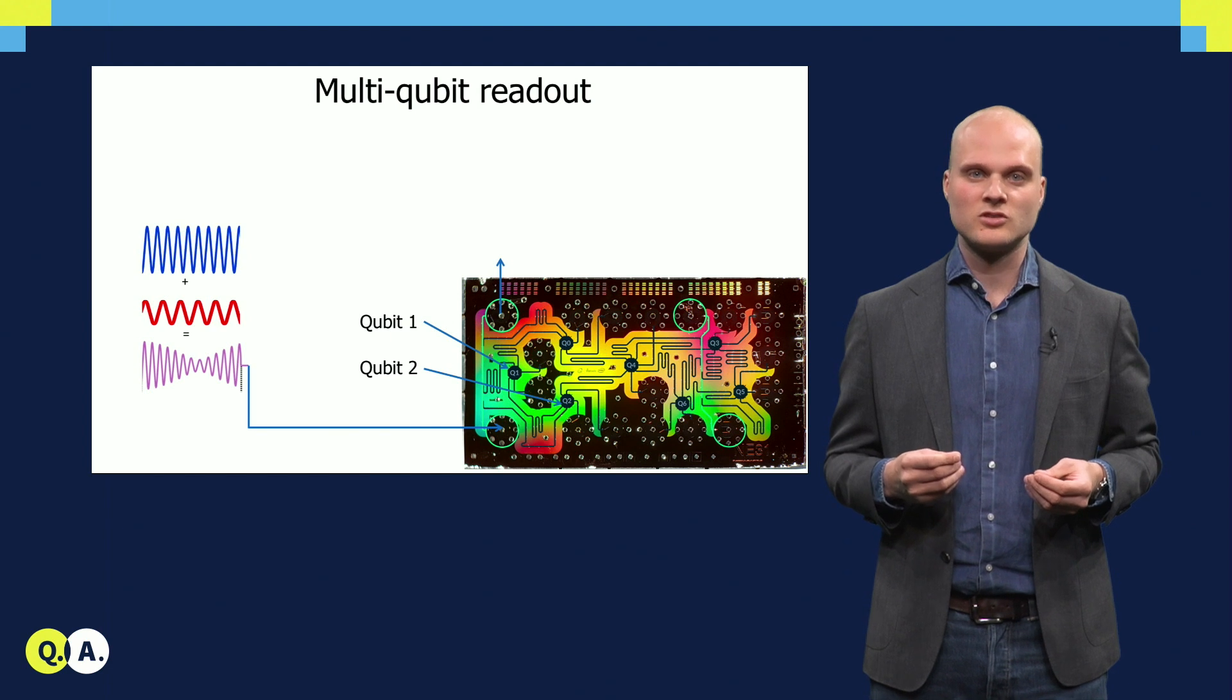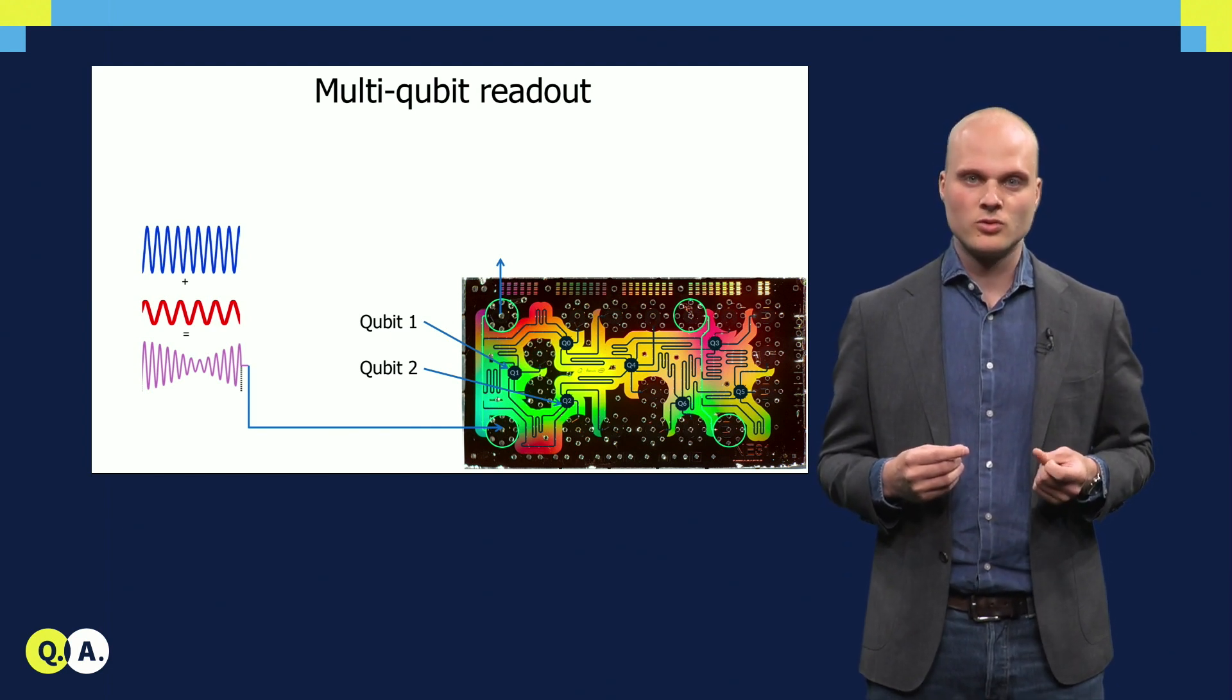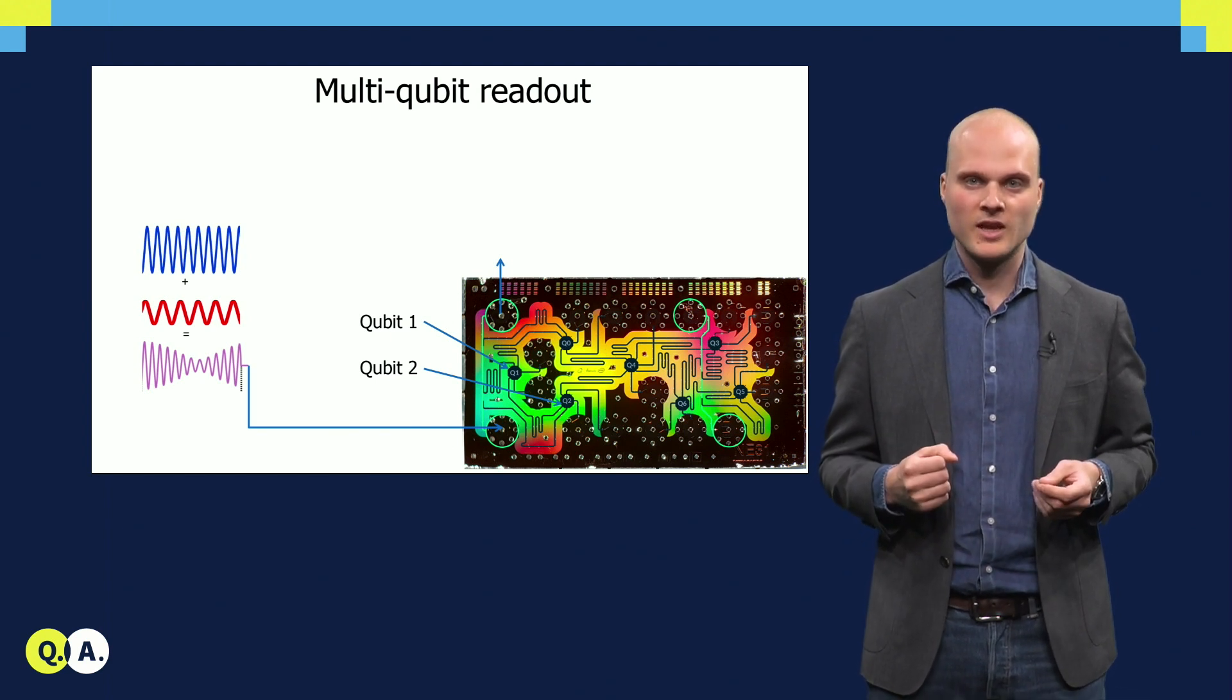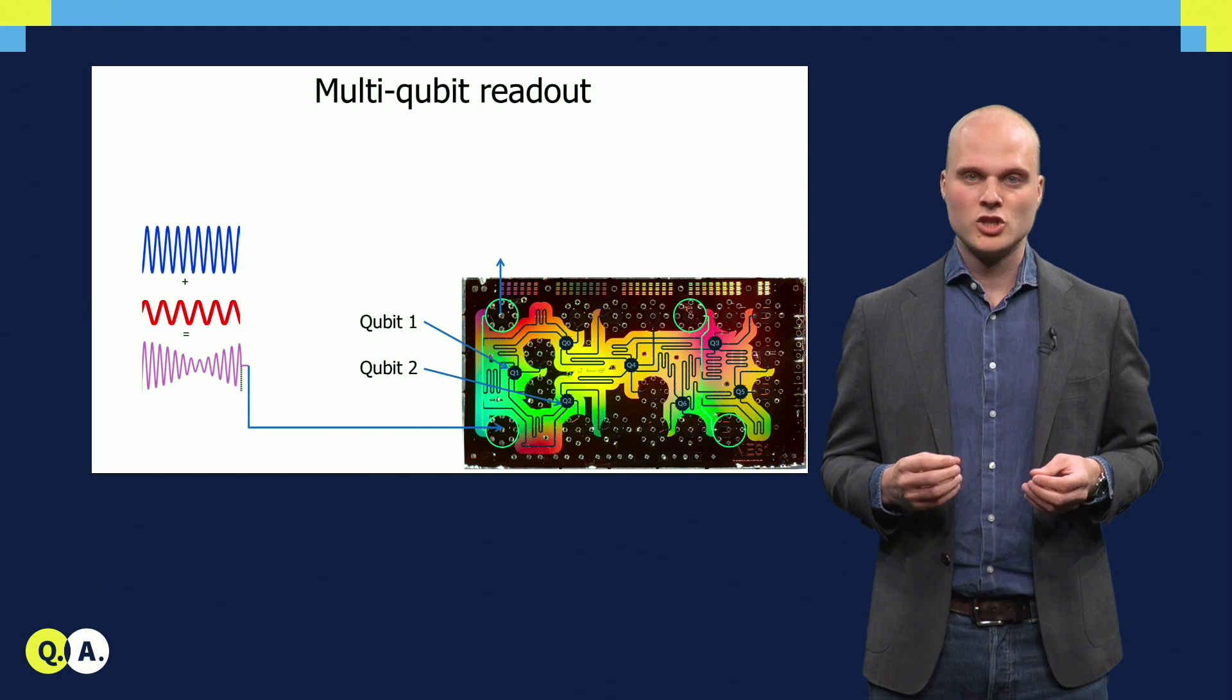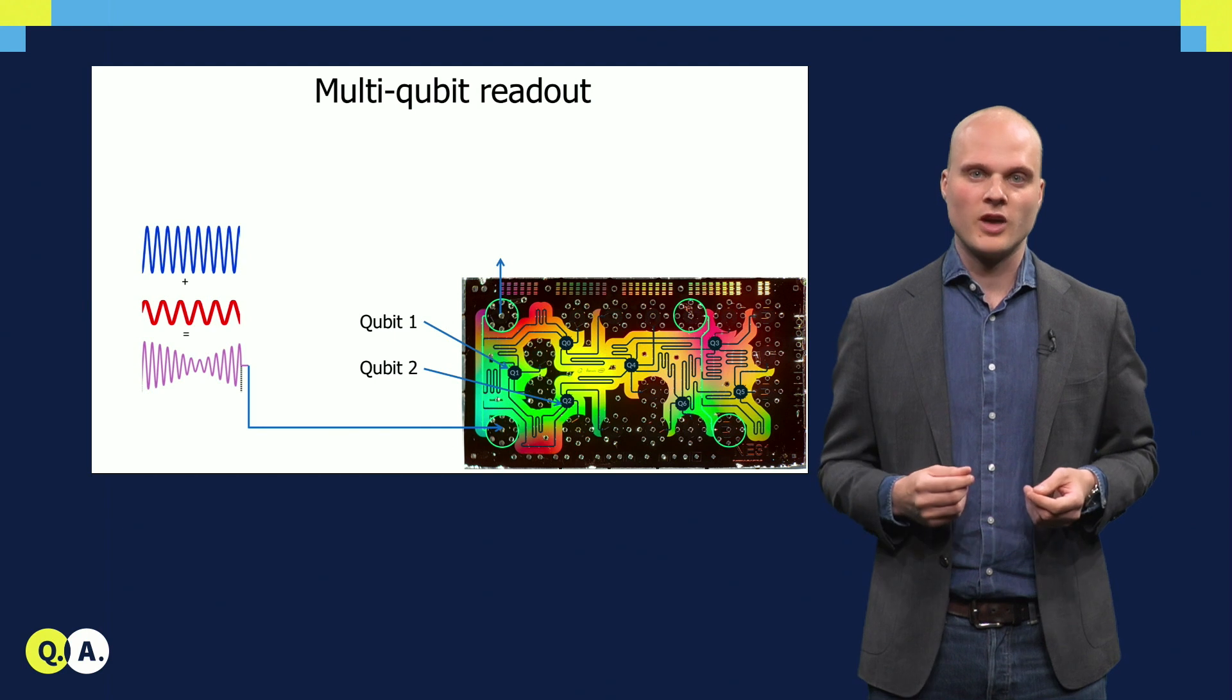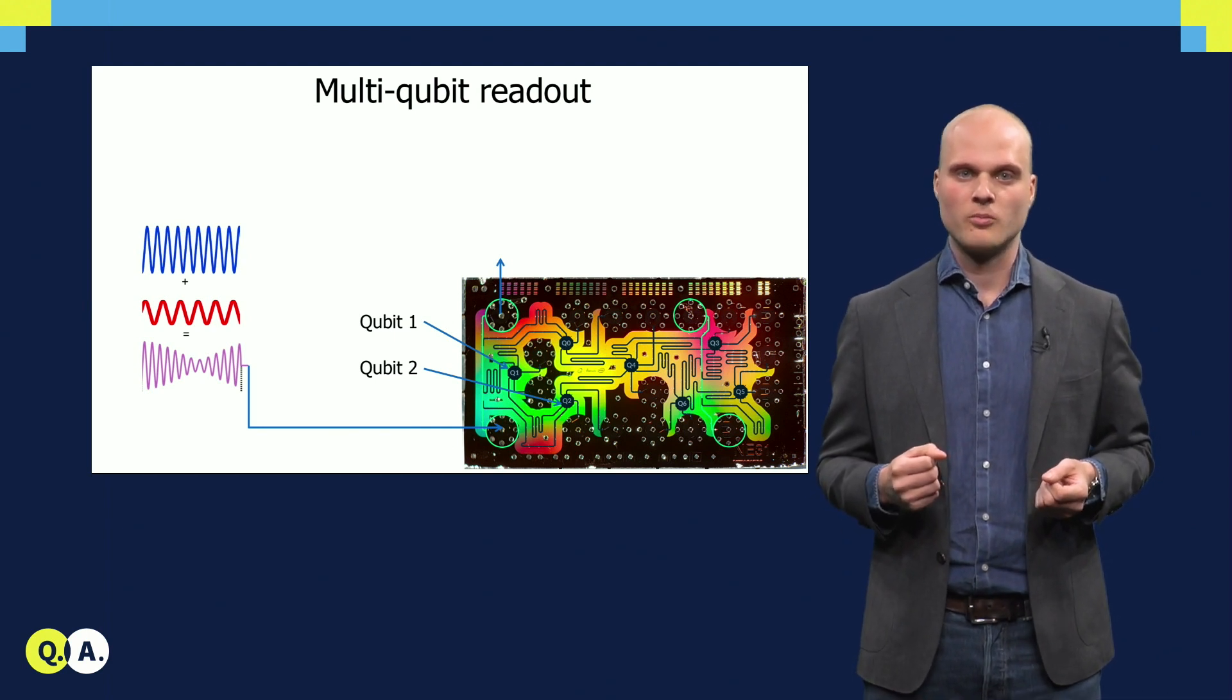By next sending down a pulse that is the sum of multiple components, in this case two, each tuned to its own readout resonator, we can probe multiple readout resonators at the same time. Each component will only be picked up by the targeted resonator. In the analysis of the output signals, we again separate the two different frequency components.